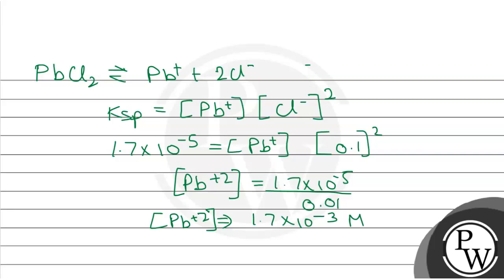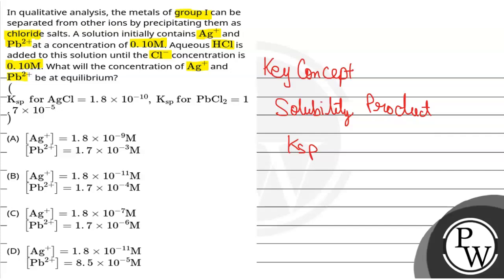Let's match with the options. In the first option, we see that Ag+ is 1.8 × 10^-9 and Pb2+ is 1.7 × 10^-3 M. The answer is option A. I hope you understood it well, best of luck.